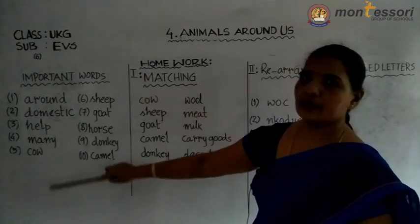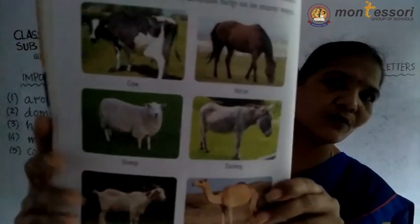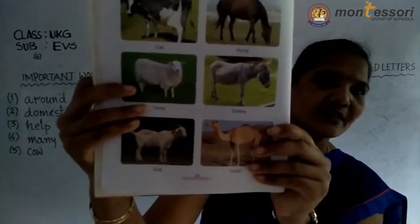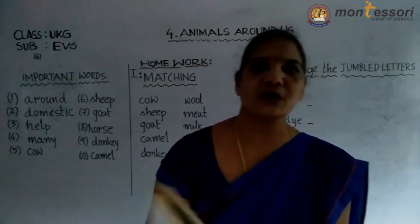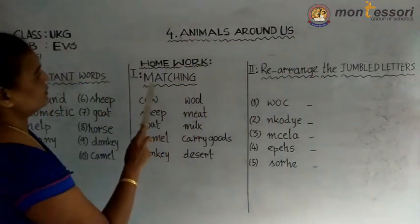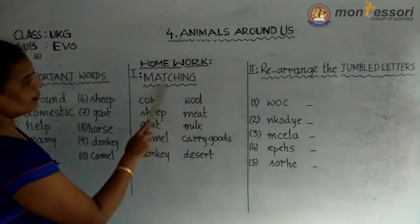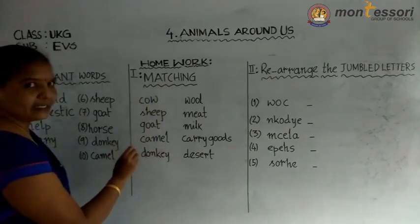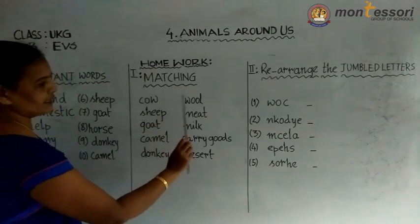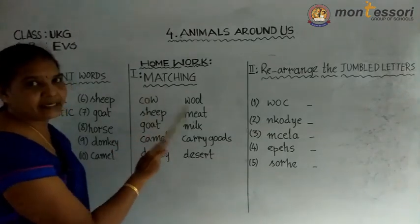These are the important words. My dear children, I want to show you these are the domestic animals. Okay, if you have a book, you can see in your textbook. Now today's homework — matching and rearranging the jumbled letters. On the left side I have written animal names and on the right side I have written the related word. Match the name of the animal and its related word.